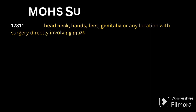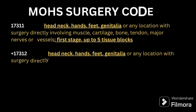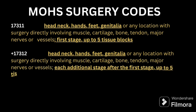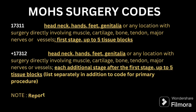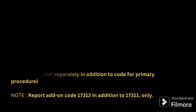Mohs surgery codes are 17311 and 17312. The anatomical area for 17311 is head, neck, hand, feet, and genitalia. Code 17311 is for the first stage and includes five tissue blocks. Code 17312 is the add-on code for head, neck, hand, feet, and genitalia; that stage also includes five tissue blocks. For additional stages in this anatomical area, we use 17312.